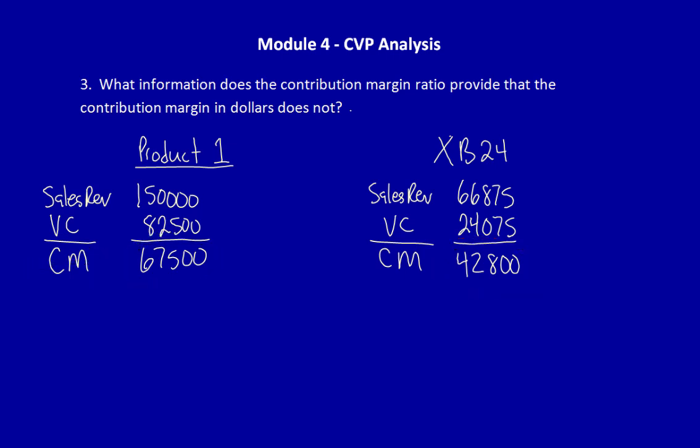Now, let's add information about the Contribution Margin Ratio to both of these products. Now, which product did you decide that we should continue to produce? Are you sure it should be Product 1?